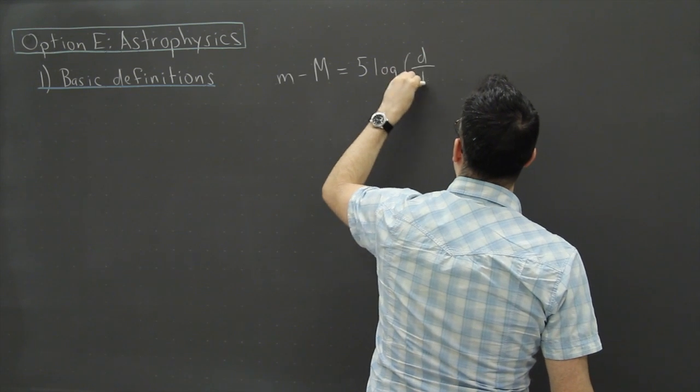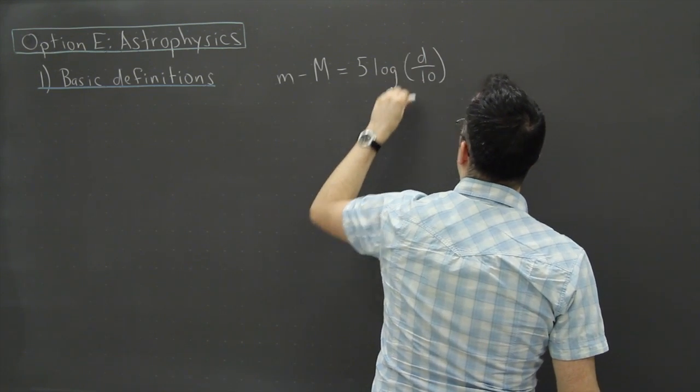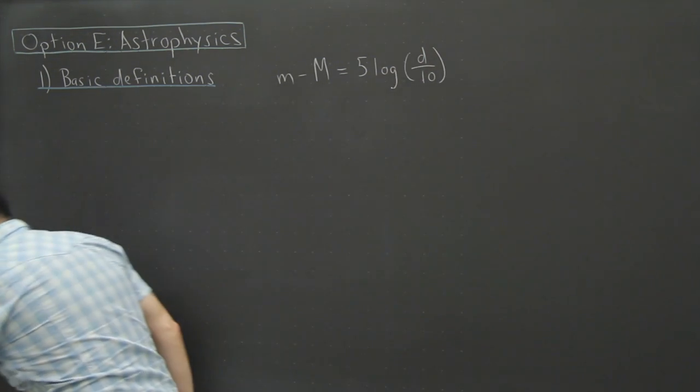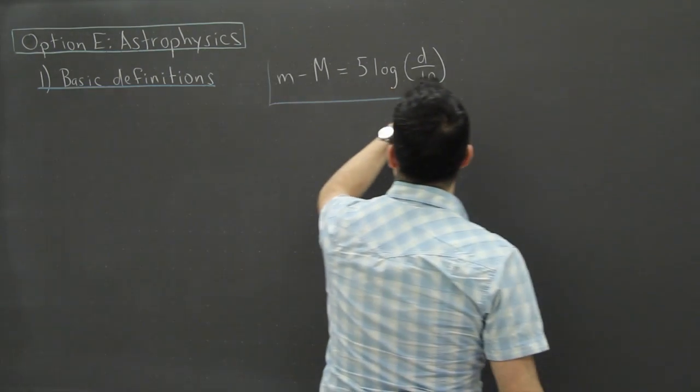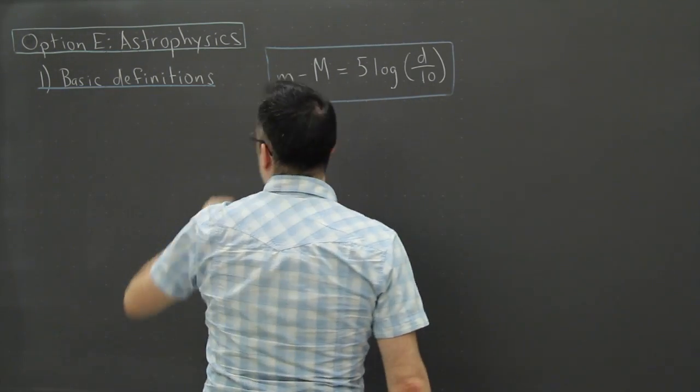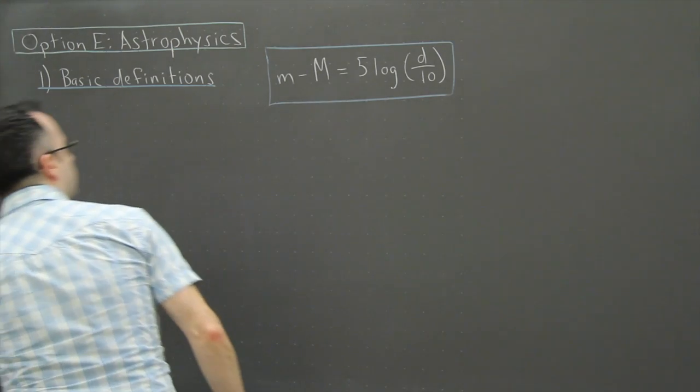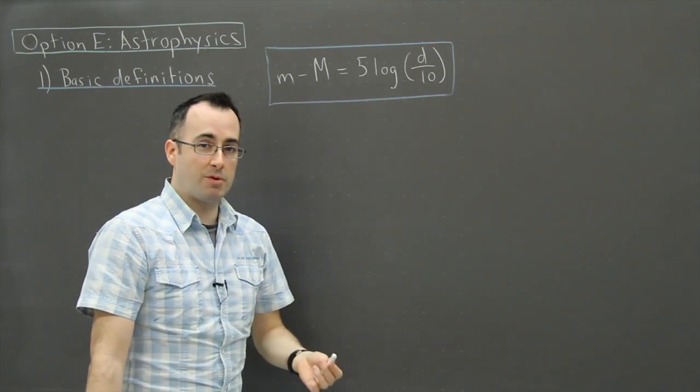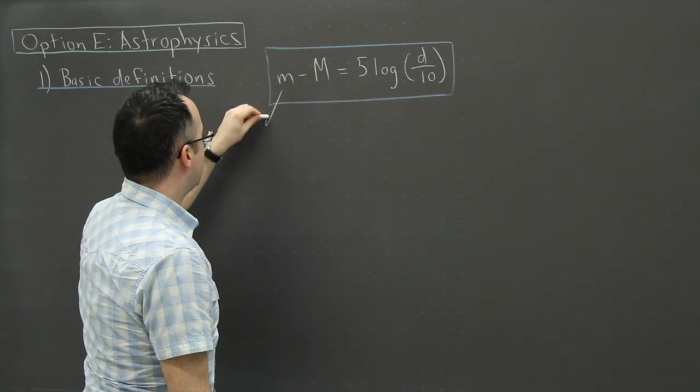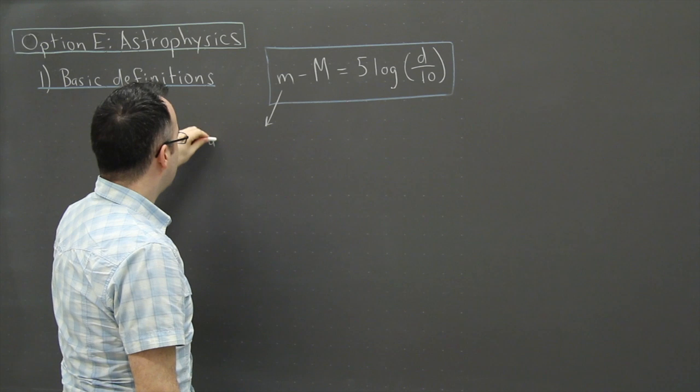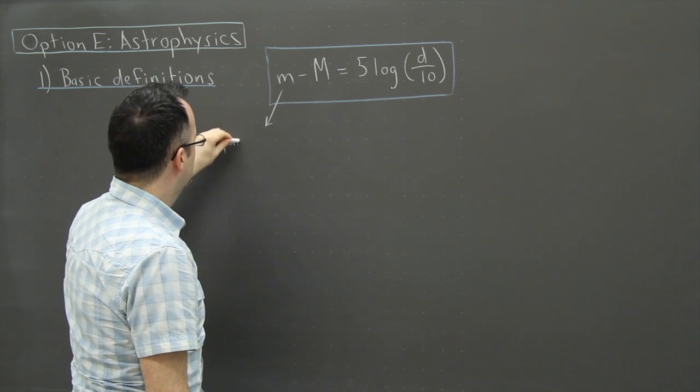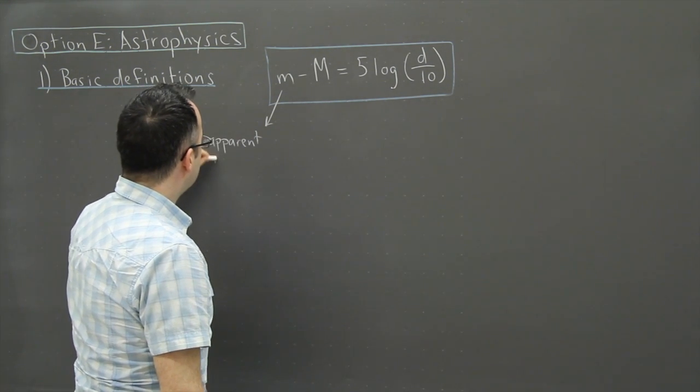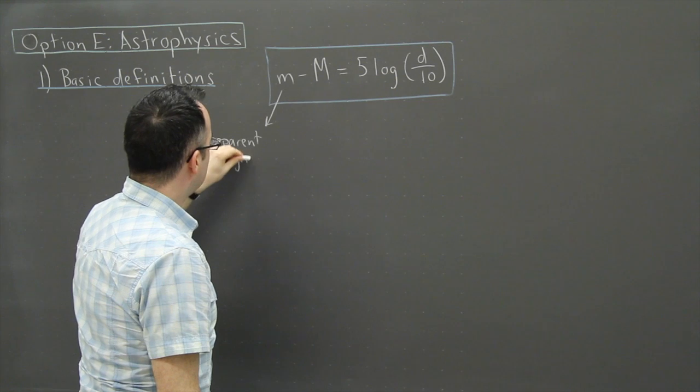We're just using a different scale here. This is an equation for how we can find the distance to stars, but this set of units is really a little bit crazy. This right here, m, this is the apparent magnitude, and it has no units.